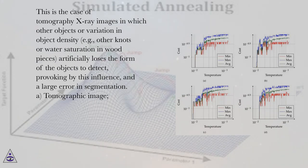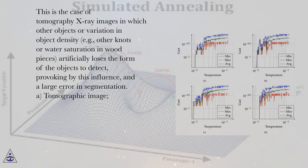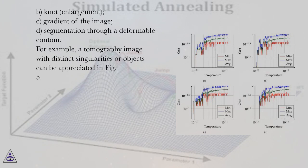This is the case in tomography X-ray images, where other objects or variation in object density — for example, other knots or water saturation in wood pieces — artificially distort the form of the objects to detect, provoking a large error in segmentation. Figure 4 illustrates: a) tomographic image, b) knot enlargement, c) gradient of the image, d) segmentation through a deformable contour.